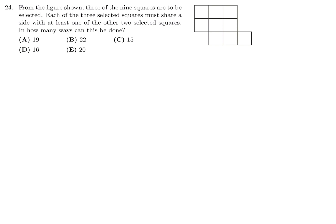From the figure shown, 3 of the 9 squares are to be selected. Each of the 3 selected squares must share a side with at least 1 of the other 2 selected squares. In how many ways can this be done? The first thing I'll do is label each of these squares 1, 2, 3, 4, 5, 6, 7, 8, 9.